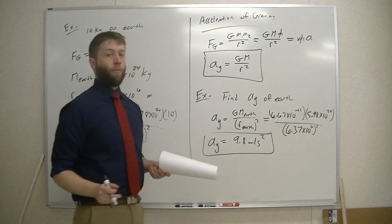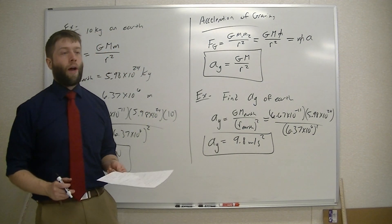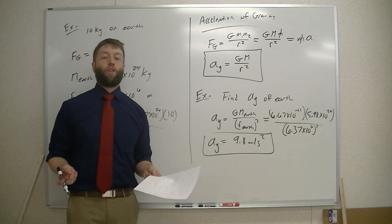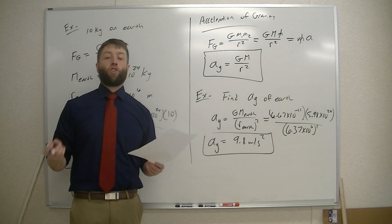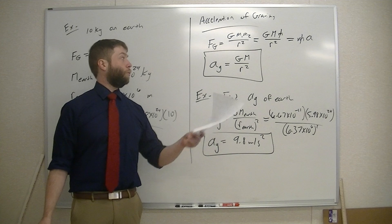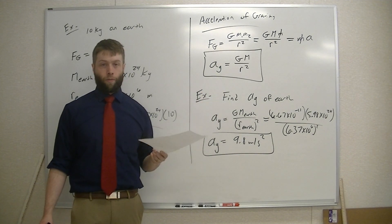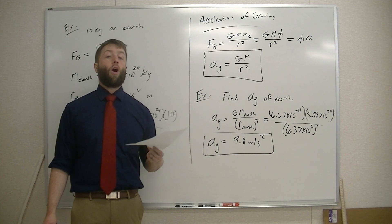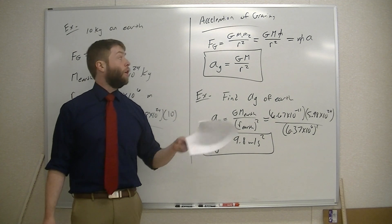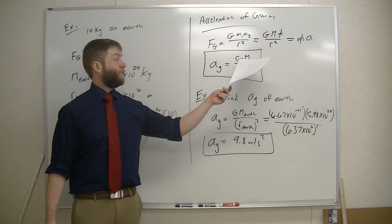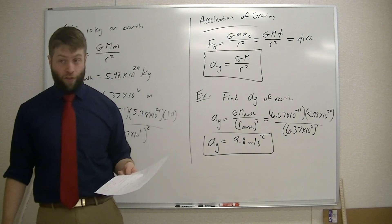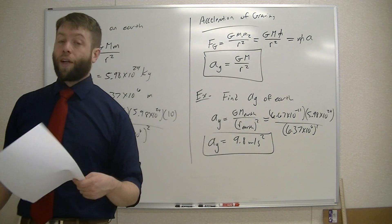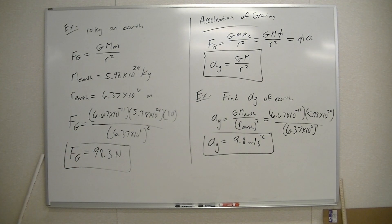So again, you might have problems where they ask you to find the acceleration of gravity on the surface of the moon — you would use the mass of the moon and the radius of the moon. If you wanted to find the acceleration of gravity on Mars, you would use the mass of Mars and the radius of Mars. It's very easy to calculate those accelerations of gravity if you have the given quantities.